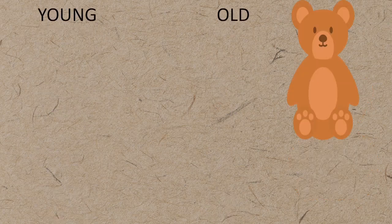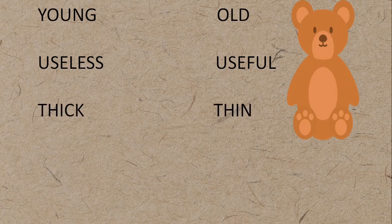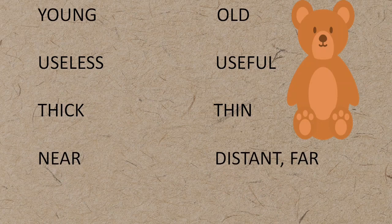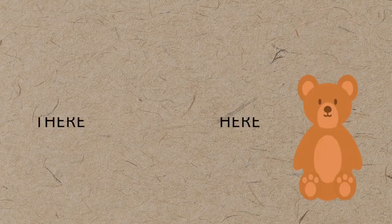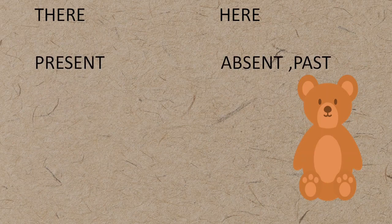'Young' (युवा) — opposite: 'old' (बूढ़ा). 'Useless' (अनुपयोगी) — opposite: 'useful' (उपयोगी). 'Thick' (चौड़ा/मोटा) — opposite: 'thin' (पतला). 'Near' (पास) — opposite: 'distant' (दूर). 'Hungry' (भूखा) — opposite: 'thirsty' (प्यासा). 'There' (वहाँ) — opposite: 'here' (यहाँ).